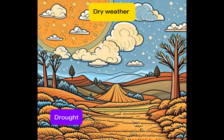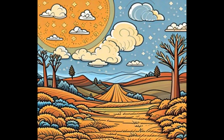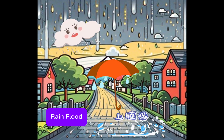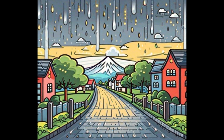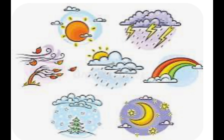A long period of dry weather with too little rain is called a drought. A long period of wet weather with too much rain can cause a flood.